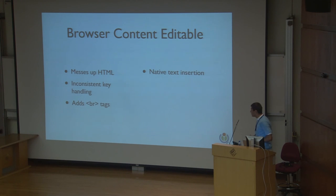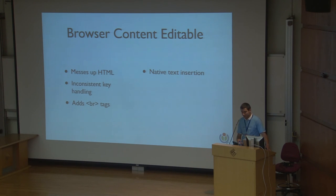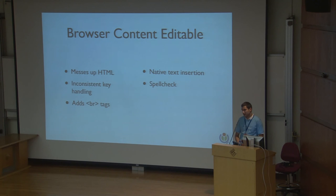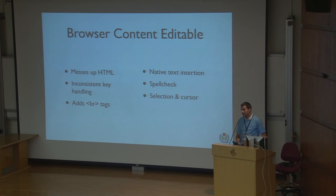Content editable also has good parts. What content editable is really good at is handling text insertion — simple typing of new text into a paragraph or list item. That's definitely an advantage for us because we don't have to implement that in JavaScript. Another advantage is spell check — because we use content editable, we can use the native spell check in the operating system or browser, so we don't have to implement that feature ourselves. Also, selection and cursor — the cursor that users see blinking and moving left, right, up and down — is something the browser gives us for free.